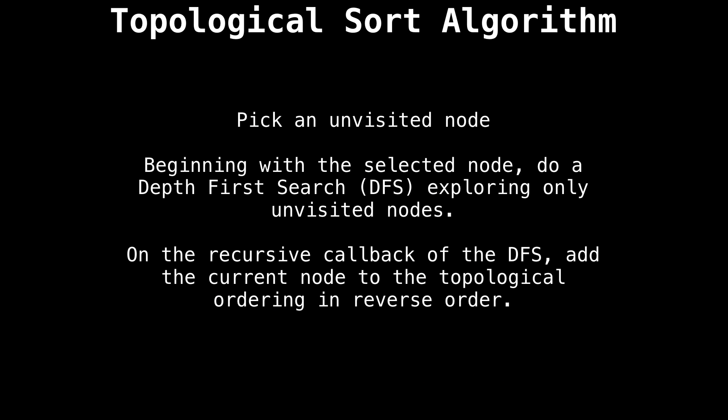So we know how it works for trees, but how about general directed acyclic graphs? Well, the algorithm is also simple. Just repeat the following steps. First, find an unvisited node, it doesn't matter which. From this node, do a depth first search exploring only reachable unvisited nodes. On the recursive callback, add the current node to the topological ordering in reverse order. And that's it.